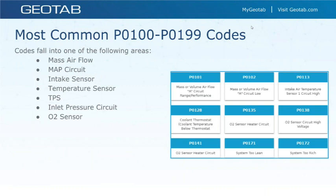Codes between P0100 and P0199 are also fuel and air metering codes. These cover things like your mass airflow sensor and throttle body — critical components to the proper operation of your vehicle. If either of these fail, they will cause your engine to run poorly and can cause catastrophic engine damage if left unrepaired. They are also associated with other codes that may not be directly relevant to the problem — one code can affect three other systems, so it's important to identify the root cause.